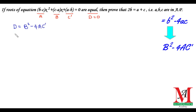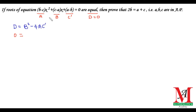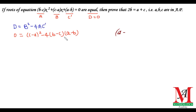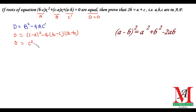Since D equals 0, we put D = 0. Now substituting: the value of b is (c − a), so we get (c − a)² minus 4 times a, where the value of a is (b − c), and the value of c is (a − b).